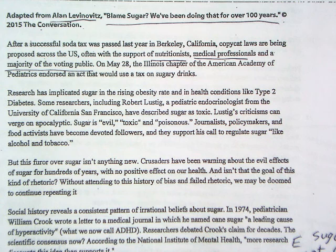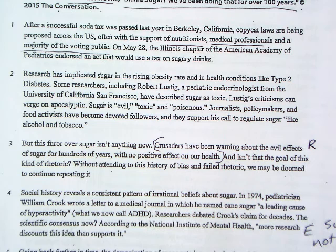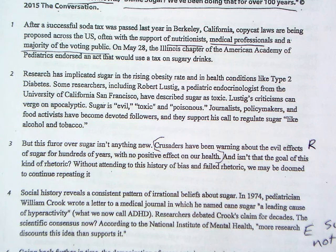Let's talk reasoning. Reasoning is when the author provides an interpretation of facts. Here in paragraph three, a particularly good line is that crusaders have been warning about the evil effects of sugar for hundreds of years with no positive effect on our health. The logic is: if sugar was so dangerous and people warned about it, you'd expect people to cut out sugar and their health would improve — but that didn't happen, over and over. They talk about how we may be doomed to continue repeating this cycle of being afraid of sugar, not eating it, and nothing good coming from it.